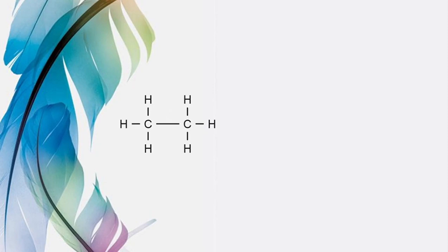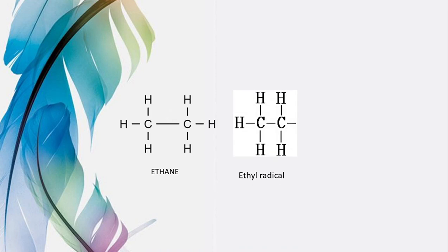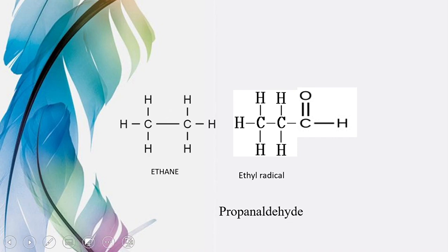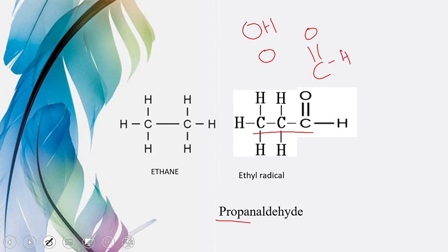Similarly, humare paas hai ethane. Removal of one hydrogen makes it ethyl radical. Ab is ethyl radical ki jagah C double bond O-H functional group humne attach kiya — kya ban gaya: propanal. Aap log is baat pe confused honge ke humne ethane use kiya hai lekin naam de rahe hain propane ke naam se. The reason is: is waqt is mein 3 carbon maujood hain — C double bond O-H mein ek carbon khud chain mein add ho raha hai. To total 3 carbon hain, aur 3 carbon ko hum propane kehte hain, aur functional group hai aldehyde, isliye iska naam hua propanal.